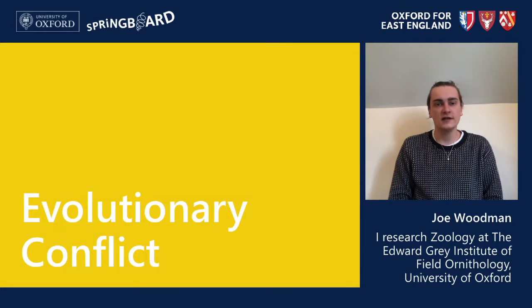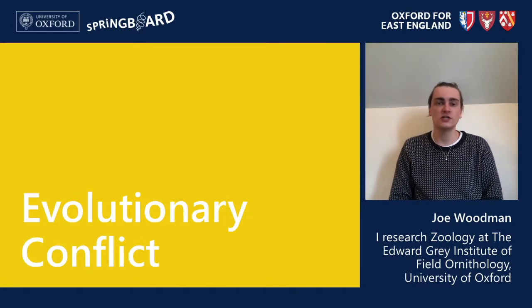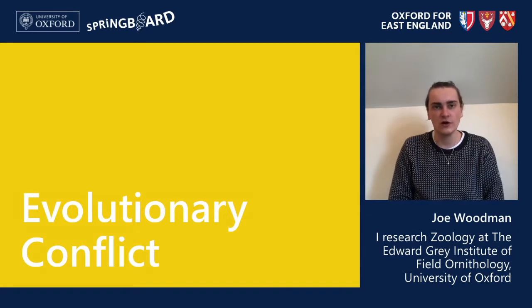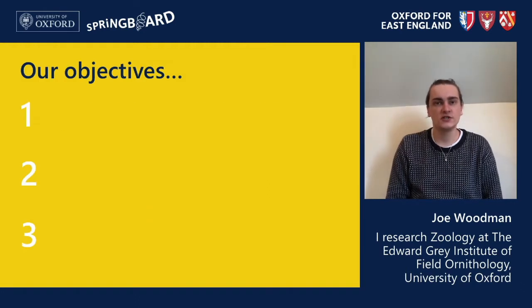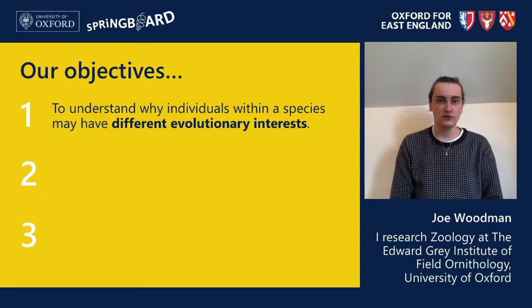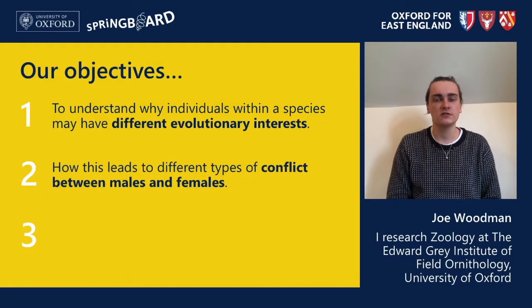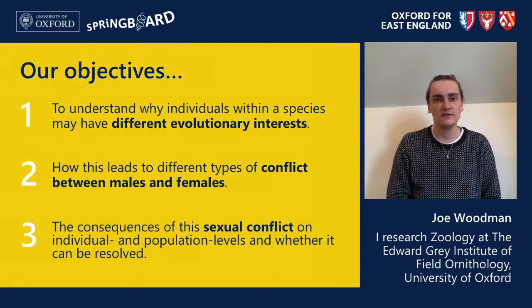Hey, I'm Joe and I'm a researcher studying for a PhD in zoology at Oxford Uni. This is a presentation about evolutionary conflict, where I'll focus a lot on sexual conflict. The objectives are to understand why individuals of the same species can have different evolutionary interests, how this leads to different types of conflict between males and females, and the consequences of this sexual conflict on individual and population levels.